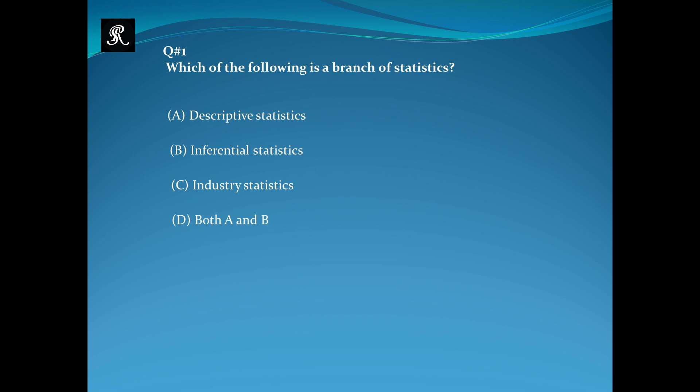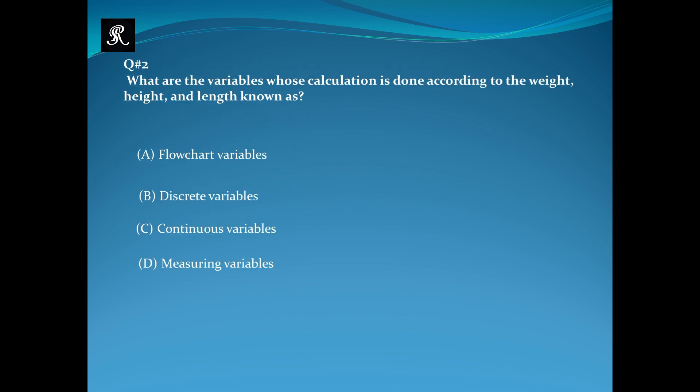Next question: What are the variables whose calculation is done according to the weight, height, and length known as? (A) Flowchart variables, (B) Discrete variables, (C) Continuous variables, (D) Measuring variables. The right option is C, continuous variables.